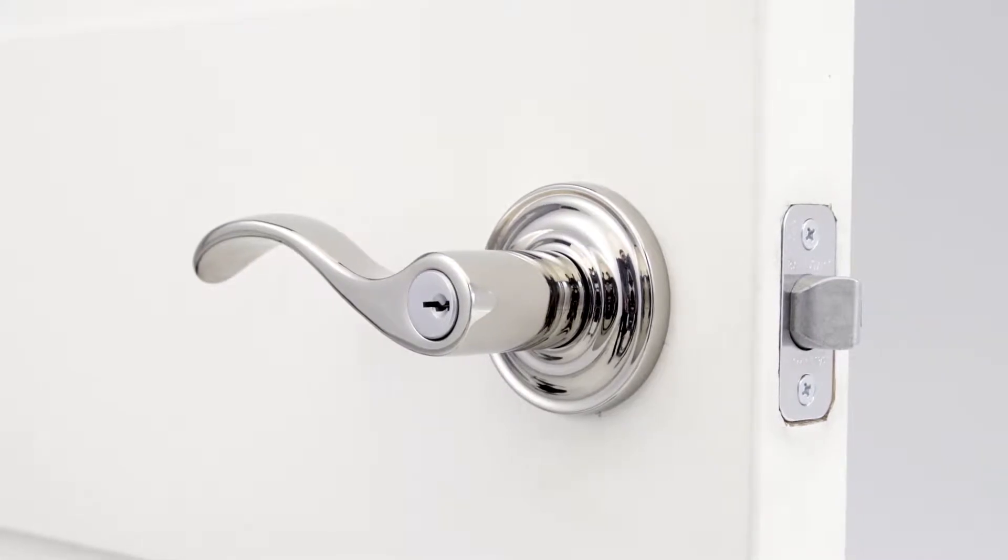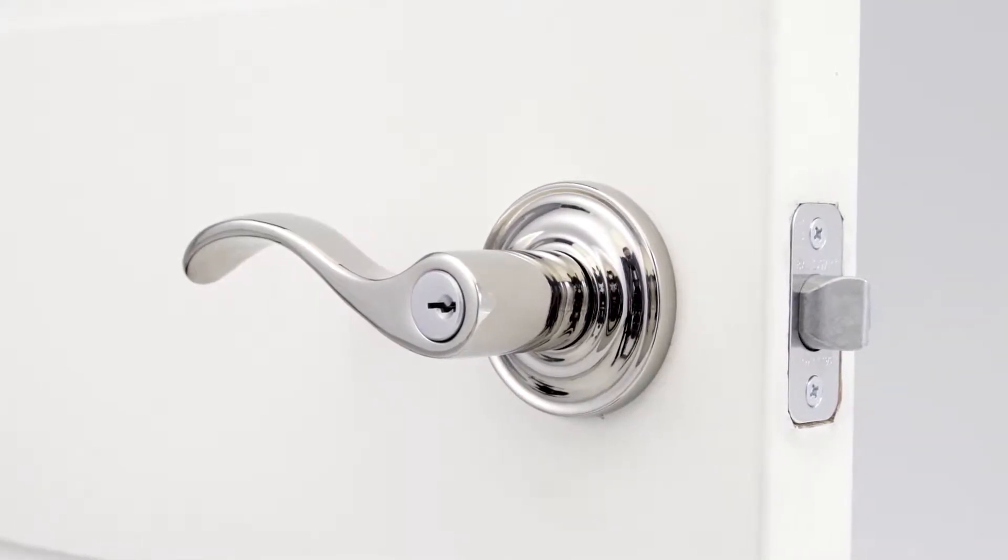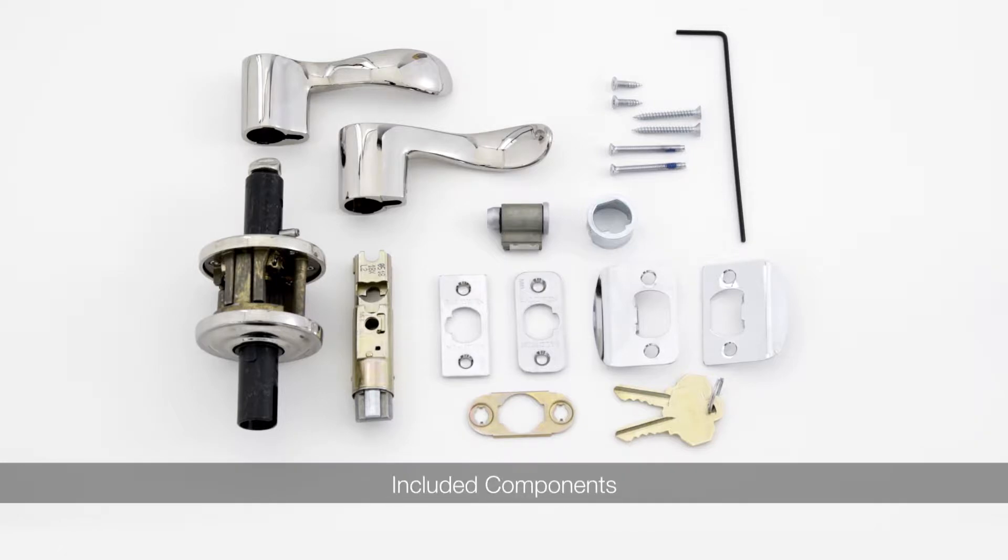In this video we will demonstrate how to install a Baldwin Reserve keyed entry on your door. The door and door jamb need to be prepared as per the supplied template. This set will not fully function until the lock is fully installed.